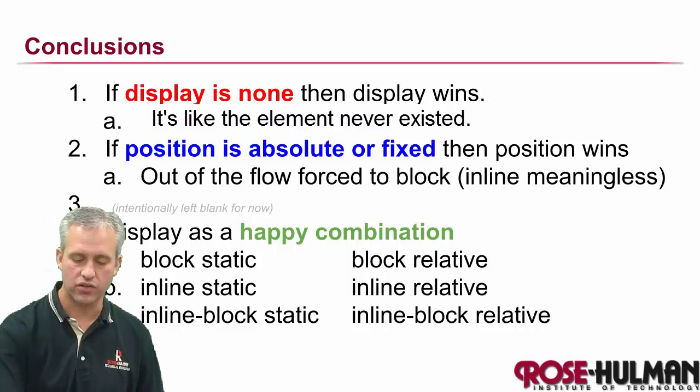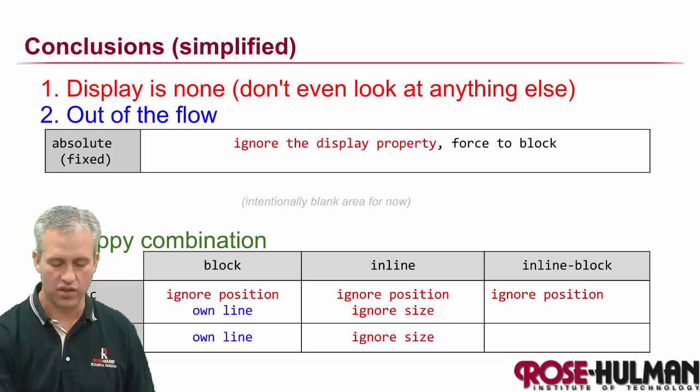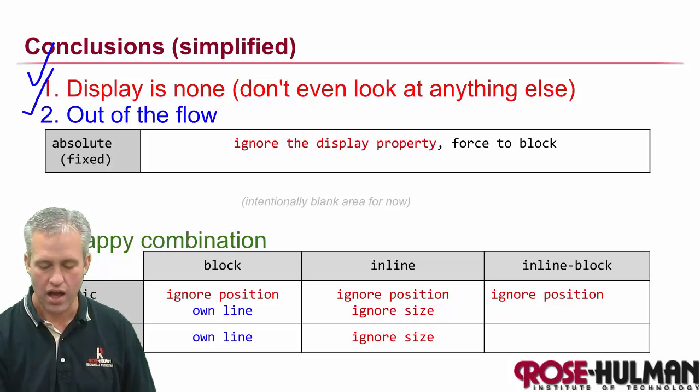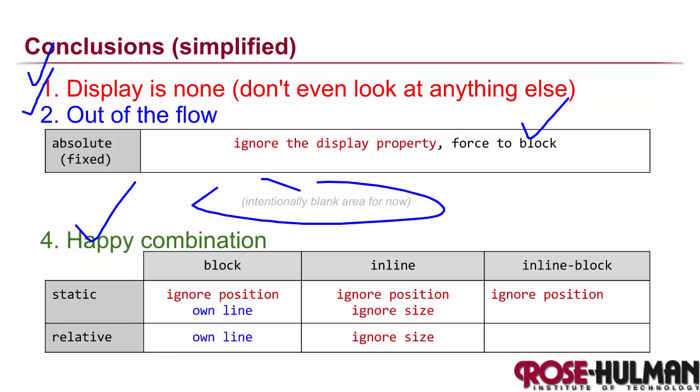So here's one way you could state the conclusions. To be honest though, I kind of like saying them this way instead, right? So display, and then you look to see if it's out of the flow, which will force it to block, spot intentionally left blank, and then happy combination. And so I think this diagram really shows the summary of what all we're trying to do.